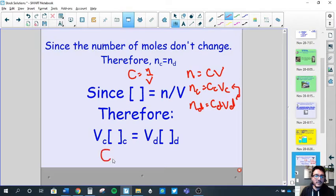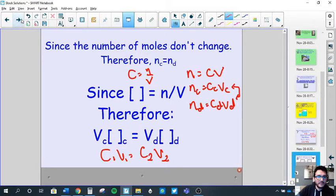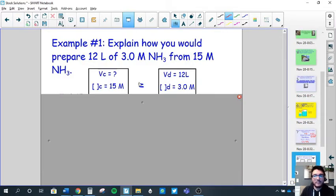This is our dilution formula, otherwise written as C1V1 equals C2V2, where one represents the initial concentration and volume, two represents the diluted concentration and volume. These are essentially the same.